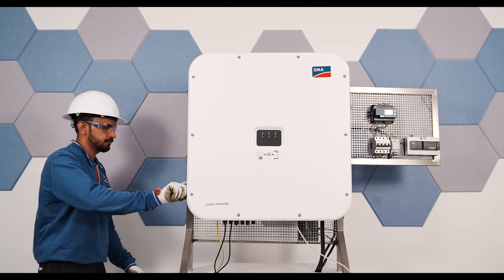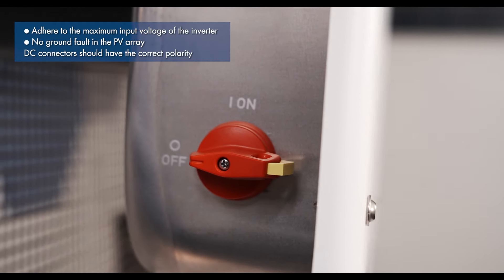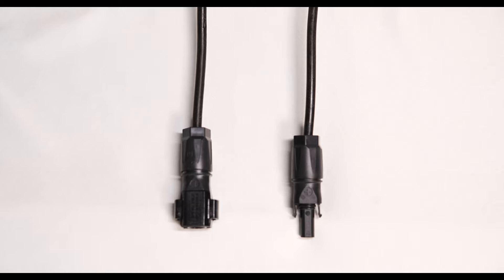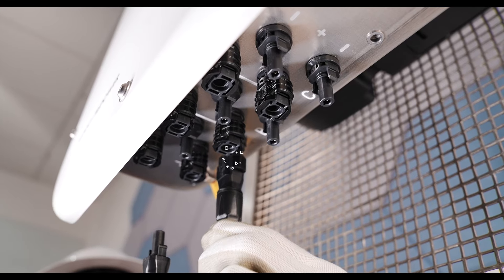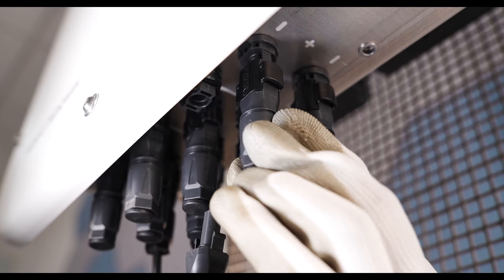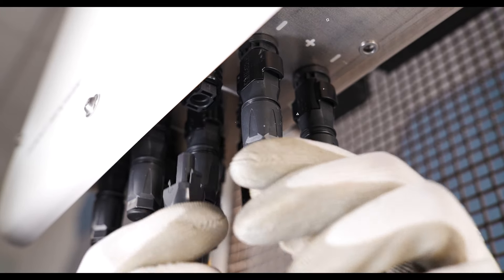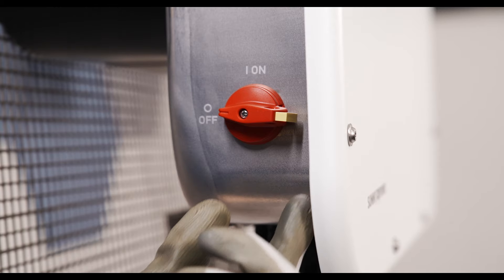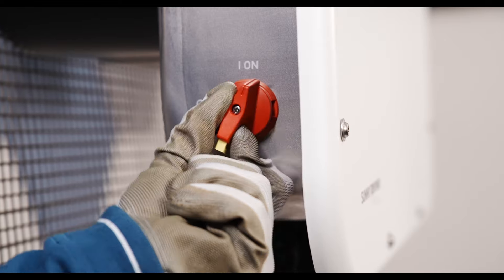Switch off the inverter's DC load brake switch and measure the PV array voltage. Connect the assembled DC connectors to the inverter and ensure it is snapped properly into place. For unused DC inputs, insert the DC connectors with sealing plugs and ensure that it is securely placed. Switch on the DC load brake switch and the AC circuit breaker.